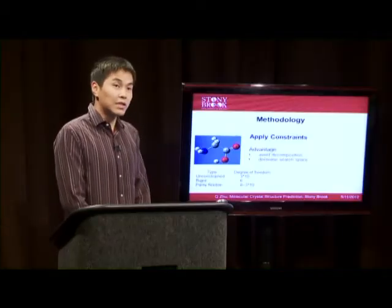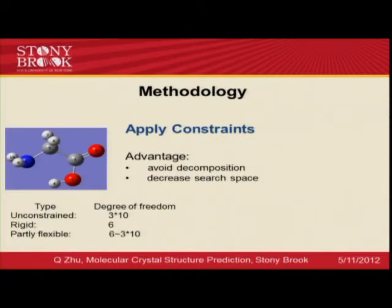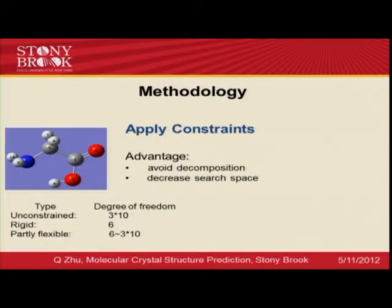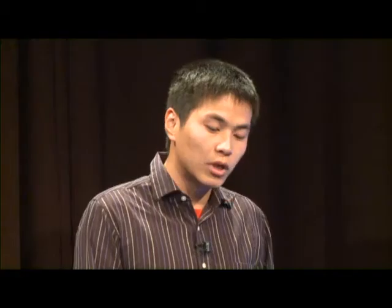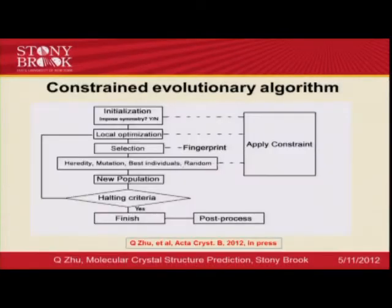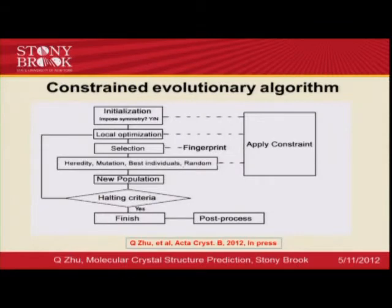Another concern is decomposition — we don't want molecules to decompose during structural search. The most straightforward approach is to apply constraints: we always keep the geometry of the molecule as a rigid unit, so that the molecular geometry is preserved. After applying these constraints, we are no longer doing unconstrained global optimization, but constrained global optimization. This gives us our constrained evolutionary algorithm.